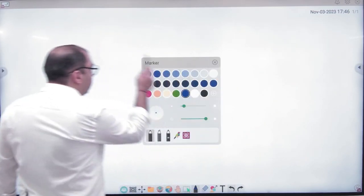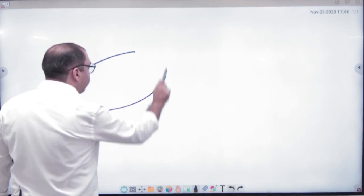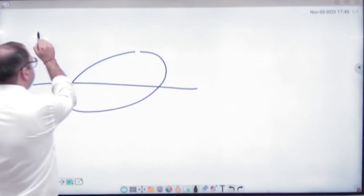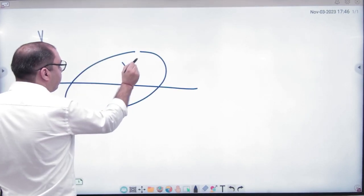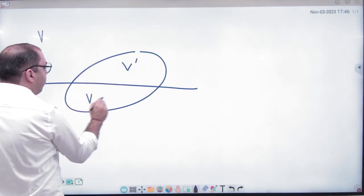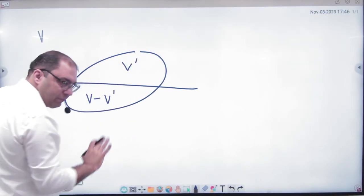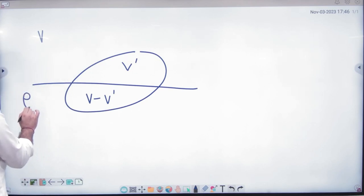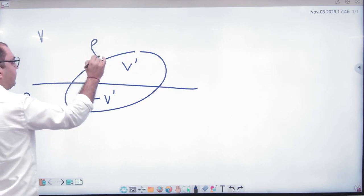For example, I will show you here. Suppose this is a body, its volume V, its V' volume is in the water and V minus V' volume is in the liquid. So the density of water is different and the density of ice is different.